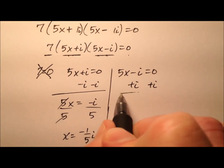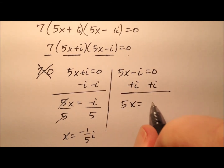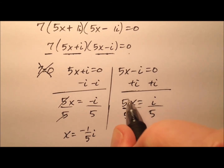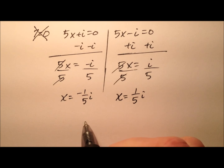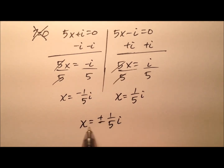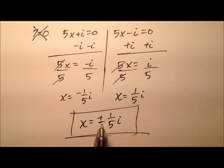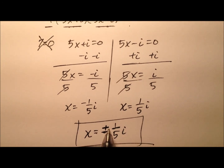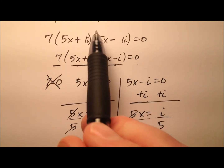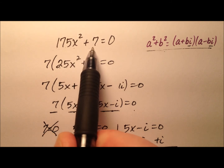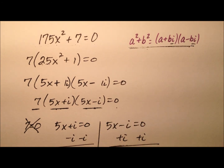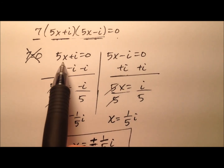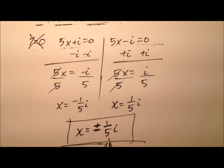On the second factor, adding i to both sides gives 5x equals positive i, and dividing by five gives x equals positive one-fifth i. So I can rewrite my solution as plus or minus one-fifth i. I would challenge you to plug this back in and verify it works. So x equals plus or minus one-fifth i is the solution for 175x squared plus seven equals zero, found by factoring using the sum of squares and the zero property of multiplication.